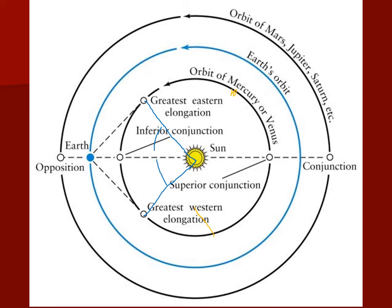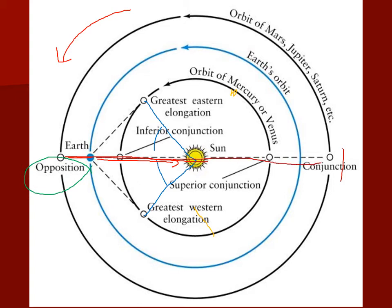For a superior planet, when Earth is between the planet and the sun, you face one direction to see the sun and the opposite direction to see the planet — so the planet is exactly opposite the sun in the sky. We call that opposition. When the superior planet is on the other side of the sun from Earth, it's lined up with the sun and very hard to see because it's up at the same time as the sun. We call that conjunction. For a superior planet there is only one conjunction — not an inferior or superior conjunction.